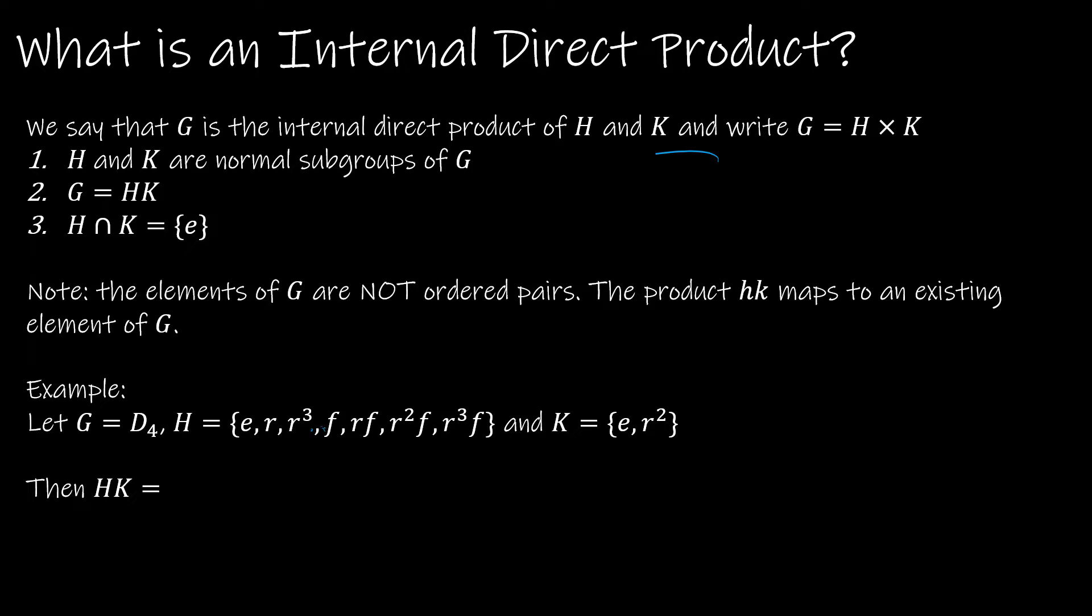Essentially, we're going to have a group G, and within G, we're going to have some normal subgroup H and normal subgroup K. And the only element that they'll have in common is the identity. Normal being that all of the left cosets and right cosets will be the same. And it also must have the property that G, everything in G, the entire group must be generated by the product of some element of H times some element of K.